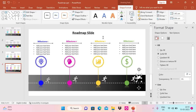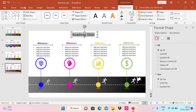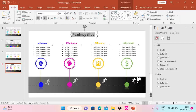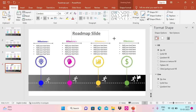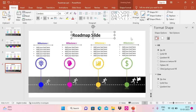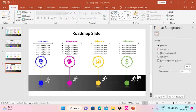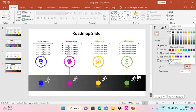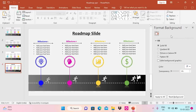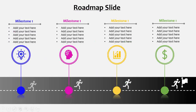I can also increase the size of the icon. Then I'll go to Format Background and choose a light color. Let me do a slideshow now — you can see our roadmap slide is ready with all the different milestones.